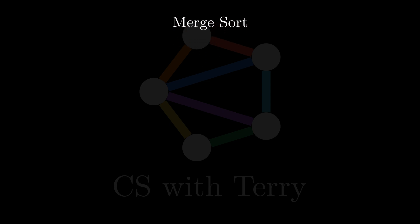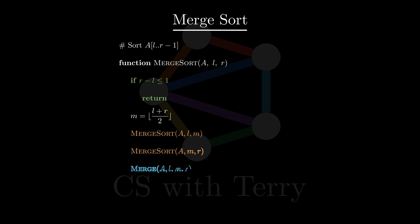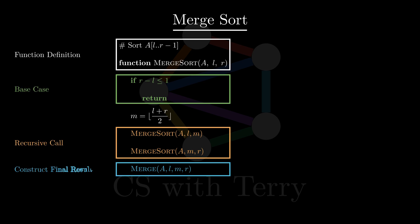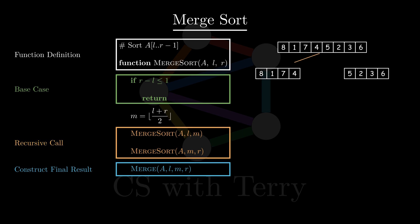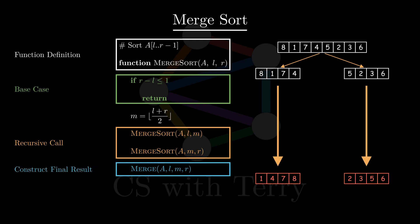Let's review merge sort one more time. This is the pseudocode of merge sort. We can summarize it into four steps: function definition, base case processing, recursive call, and constructing the final result. In the base case processing step, if the number of elements to be sorted is less than or equal to 1, return directly. In the recursive call step, the array A is split into two subarrays and they are sorted separately. In the constructing final result step, we merge two sorted subarrays into one sorted array.